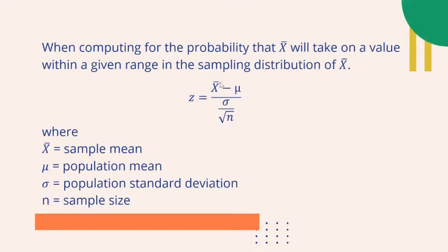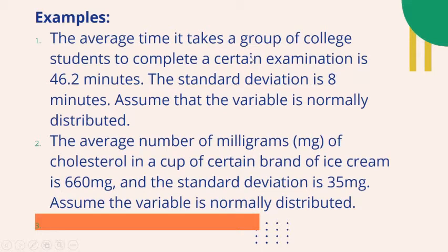This formula is used when computing for the probability that a sample mean will take on a value within a given range in the sampling distribution. Here, X-bar is the sample mean, mu is the population mean, sigma is the population standard deviation, and n is the sample size.